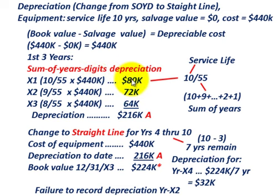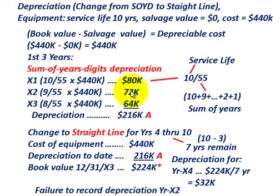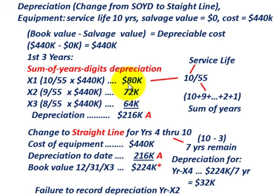That gives us depreciation for the first year of $80,000. Moving to year X2, we have nine years of service life remaining divided by 55, times the depreciable cost of $440,000, giving $72,000 for the second year. For the third year, eight years remaining divided by 55, times $440,000, gives $64,000. So our total depreciation through the first three years is $216,000.